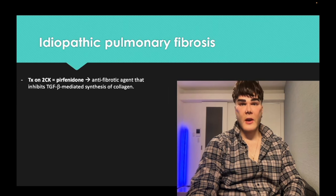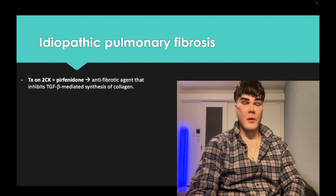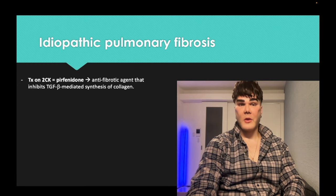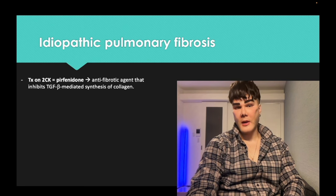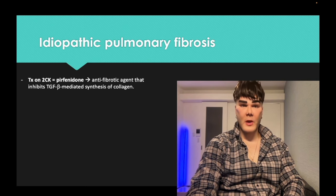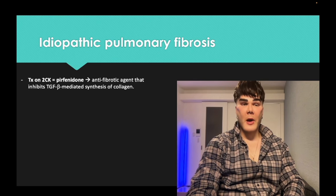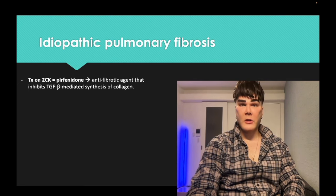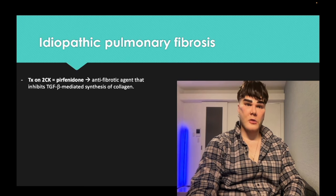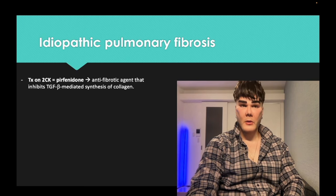Pirfenidone is a weird-sounding drug you need to be aware of — it can be used for pulmonary fibrosis. They'll give you a UIP usual interstitial pneumonitis standard vignette and the answer is just pirfenidone. They won't assess the mechanism, just know the drug name.